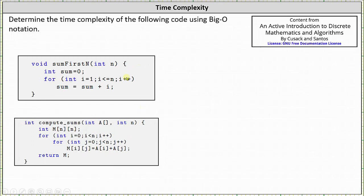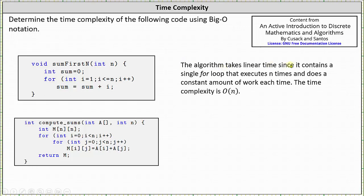Analyzing the code for our third example, the algorithm takes linear time since it contains a single for loop that executes n times, and does a constant amount of work each time. Thus the time complexity is big O of n.